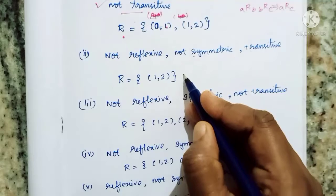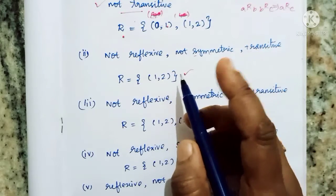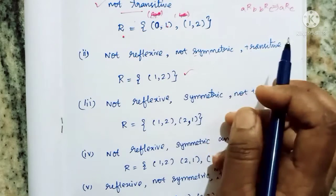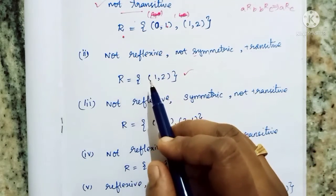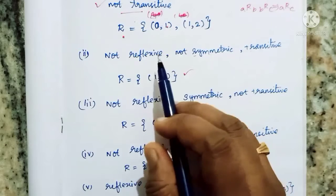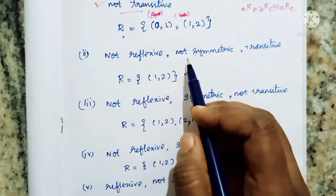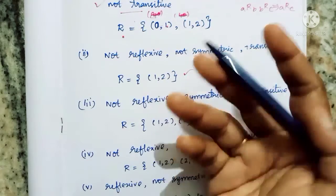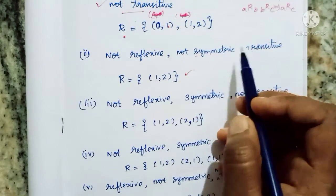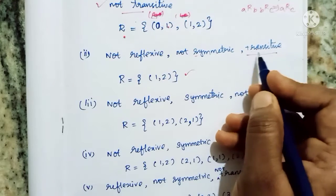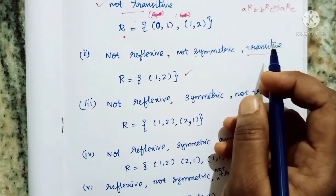We can set a single element. If there is a set of elements, it is transitive. The element is not symmetric. A singleton set is always transitive. Every singleton is a case where transitivity holds automatically.